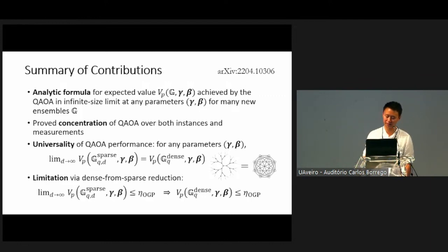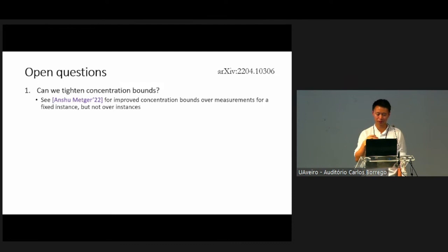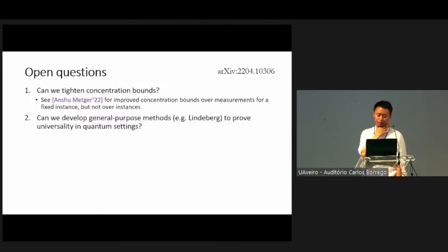Then we show, using this universality result, a limitation of the QAOA for dense graphs using this dense from sparse reduction. Some open questions that I will leave you with is, can we tighten this concentration bound? Currently, we only have this argument from showing that a second moment agrees with the first moment squared, so it doesn't give you a very tight bound. Tony's work with Onirak has shown exponential concentration over measurements for a fixed instance, but they don't have an improved concentration bound for instances. So that would be very nice to get if we can.